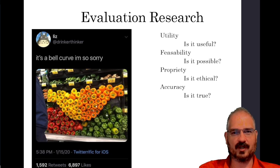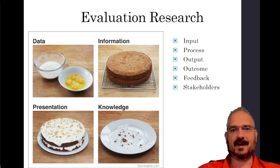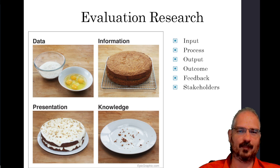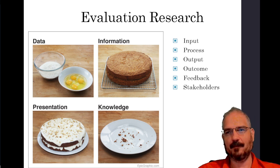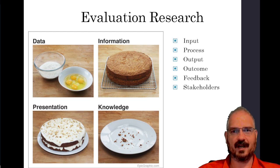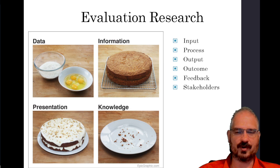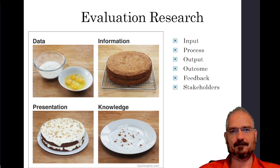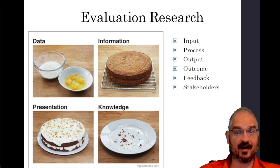There are different features of evaluation research. The first is the input — all the things you have at the beginning of the process. When we did evaluation research at my university about noise complaints in a certain neighborhood, our input was the houses and residents of the neighborhood, the police patrol patterns and responses, and the amount of noise being generated.